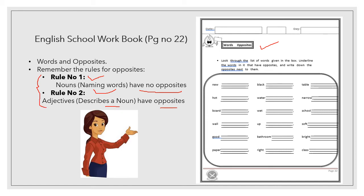So, let us start. Word opposites. Look through the list of words given in the box. Underline the words that have opposites and write down the opposite next to them. So, I will do only this one line for you. And then the next will be done by yourself. You have to read the word carefully and you have to think that either it's a noun or it's an adjective. So, let us start. New. Is new a noun? No. New is not a noun. New is an adjective. So, you will underline it like this and write over here. What is the opposite of new? It's old. O-L-D. Old. Very good. You will write it like this.